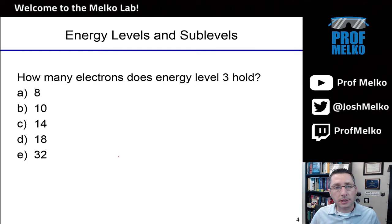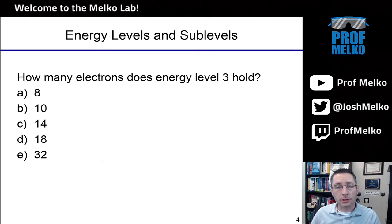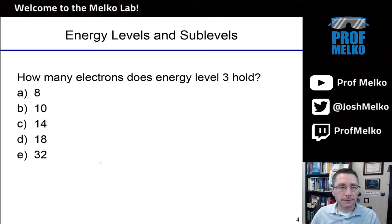Now we're going to get into energy levels and sublevels. This is based on the Bohr model of the atom, where he first discussed the notion of electrons being in discrete energy-level orbits. How many electrons does energy level 3 hold? Think about it yourself and try to answer.